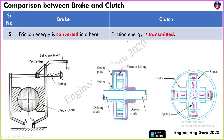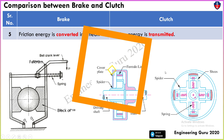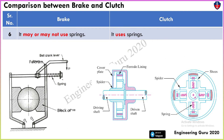But in a clutch, friction energy is transmitted rather than lost. Final point: in a brake, a spring may or may not be used. For example, in a double pivoted shoe brake, a spring is used, but in other brakes like band brake or single shoe brake, the spring is not used. However, in a clutch, the spring is always used.